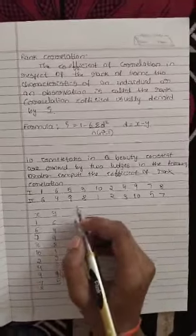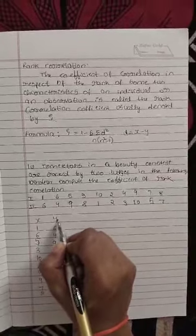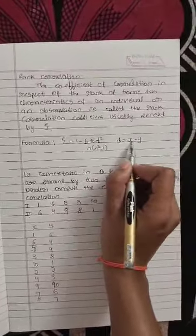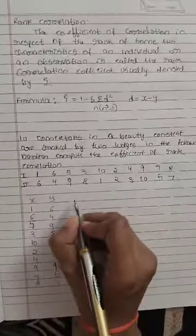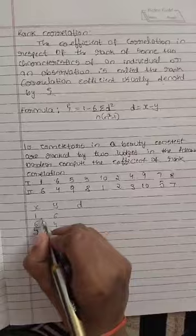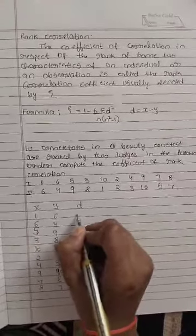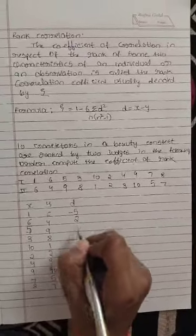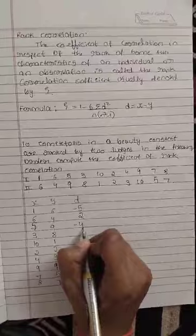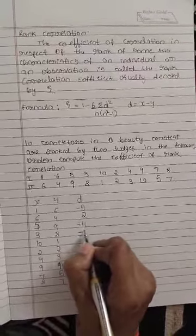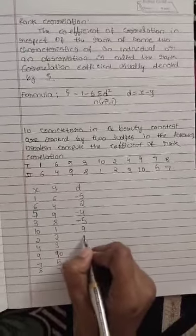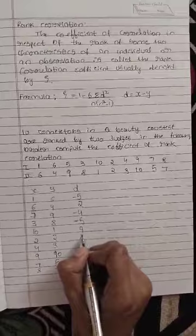After writing x and y, we want the d value. D means x minus y, so calculate the d value by subtracting x and y. 1 minus 6 is minus 5, 6 minus 4 is 2, 5 minus 9 is minus 4, 3 minus 8 is minus 5, 10 minus 1 is 9, 2 minus 2 is 0.